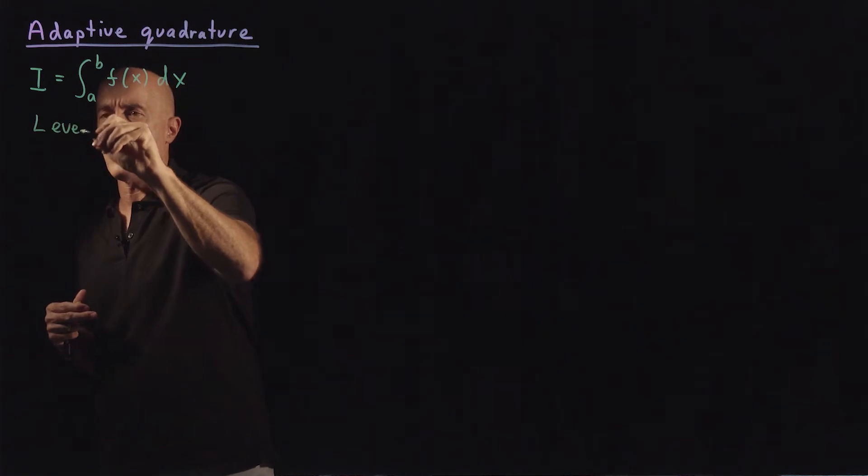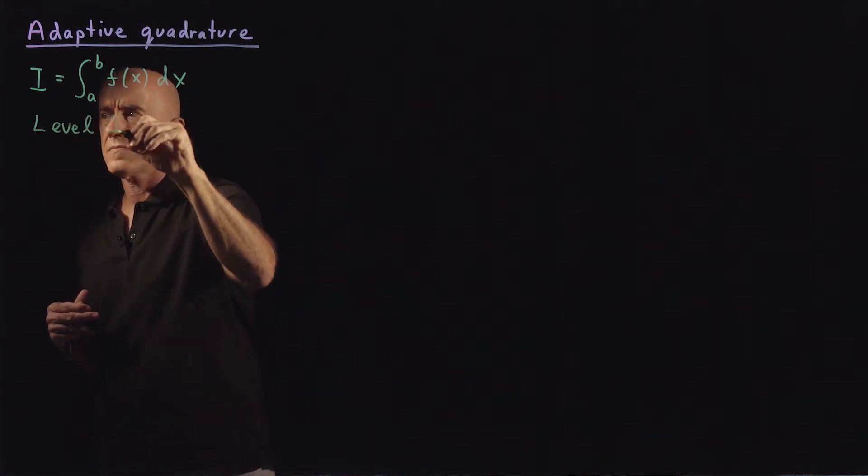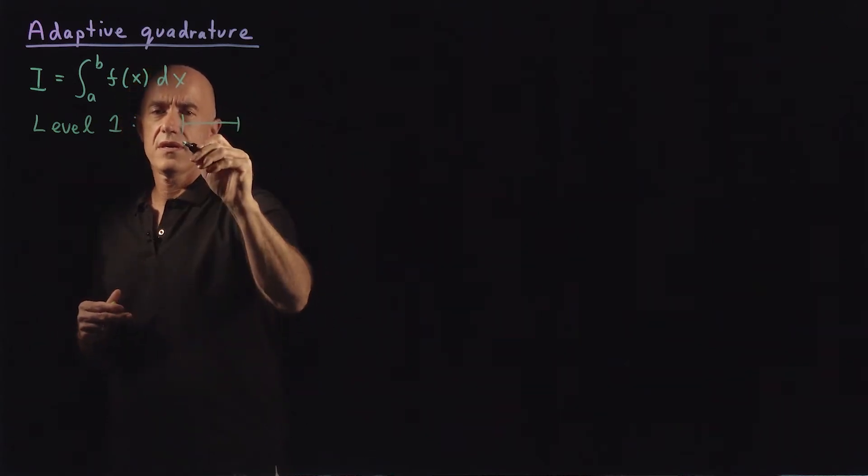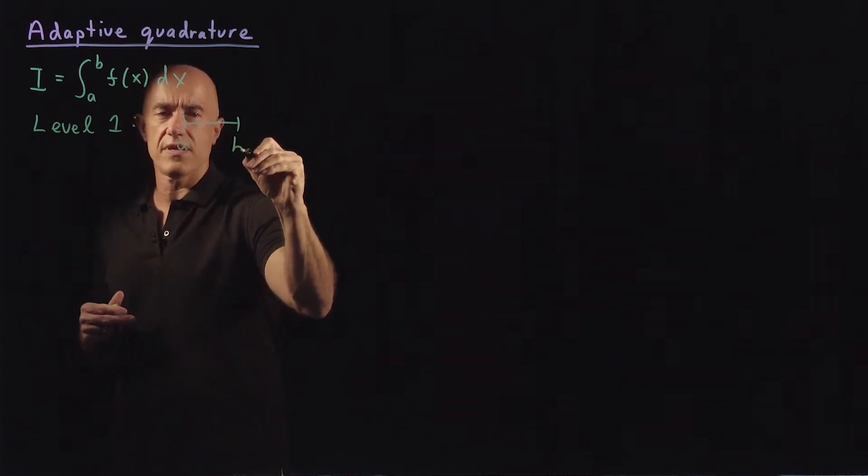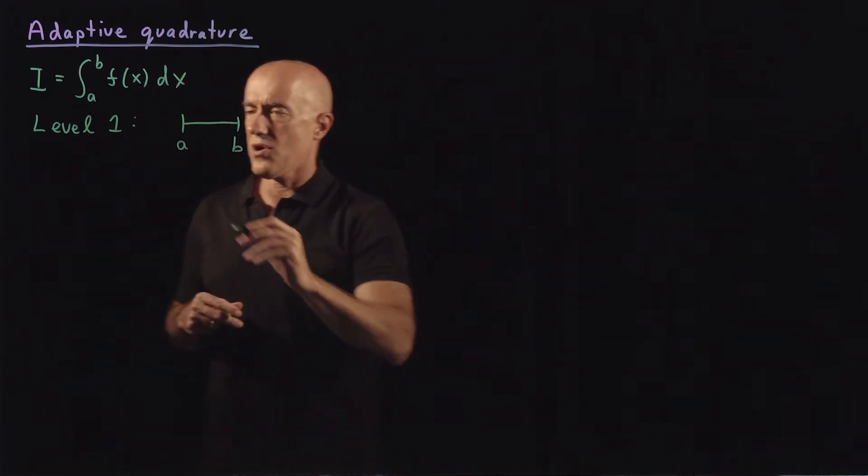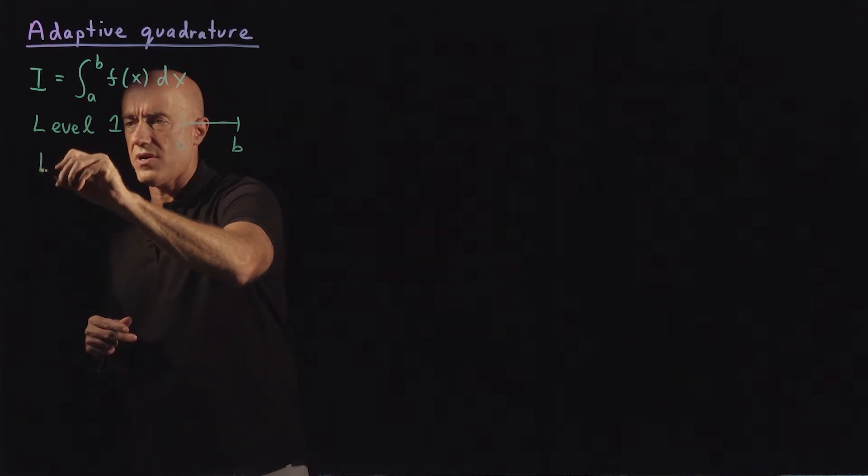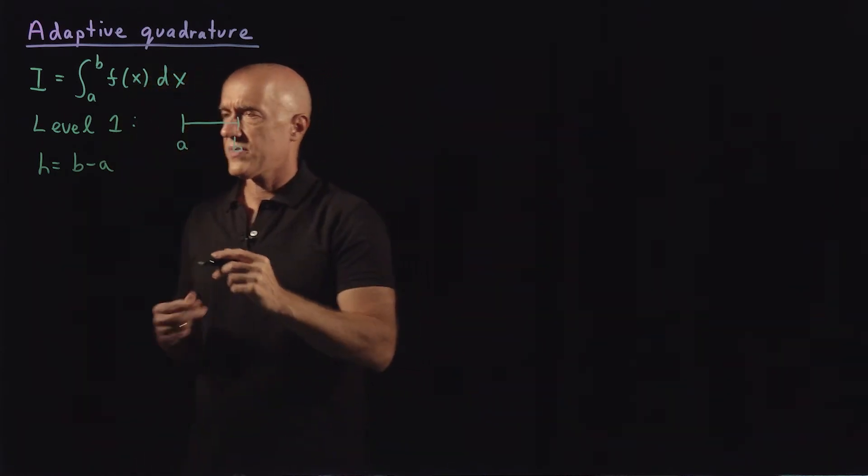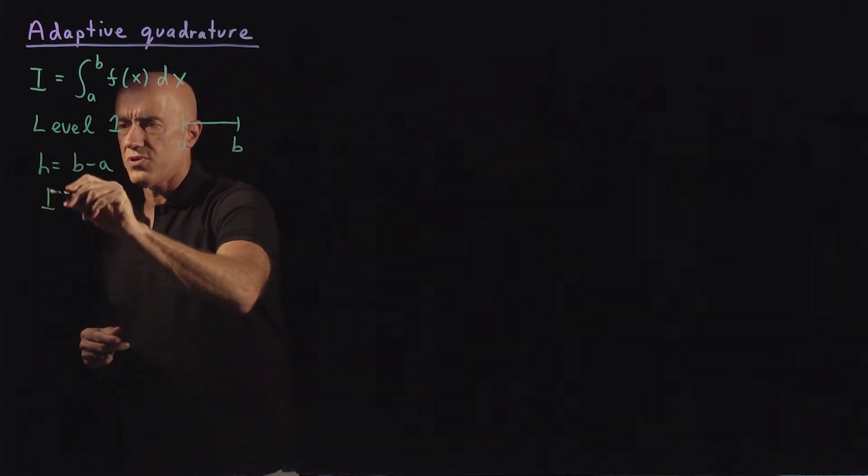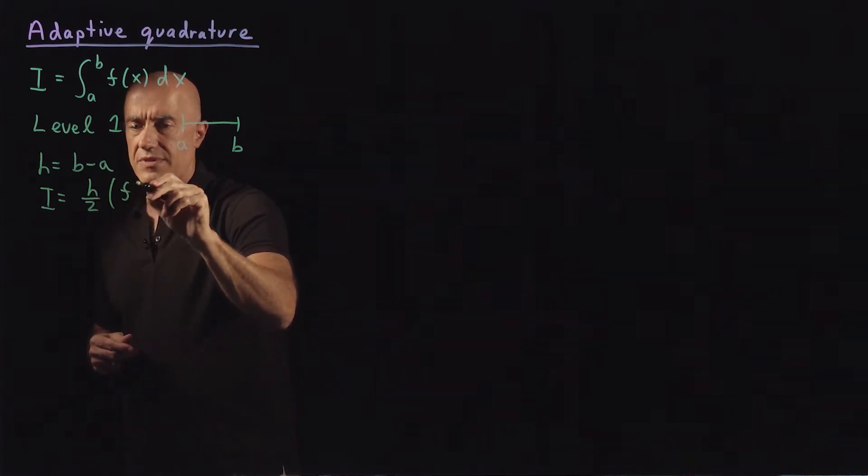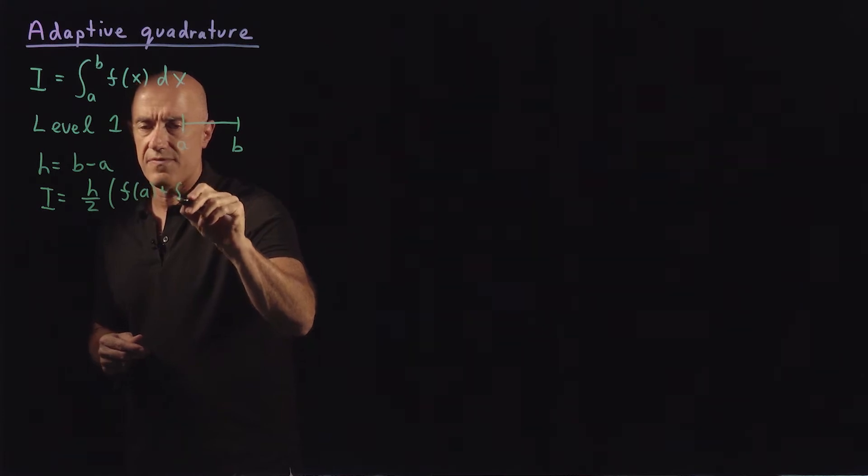We're going to start at level one. Basically, we're only going to use two points, which are the endpoints of the interval. So we integrate from a to b. On level one, our grid spacing is just b minus a. That will be our h.